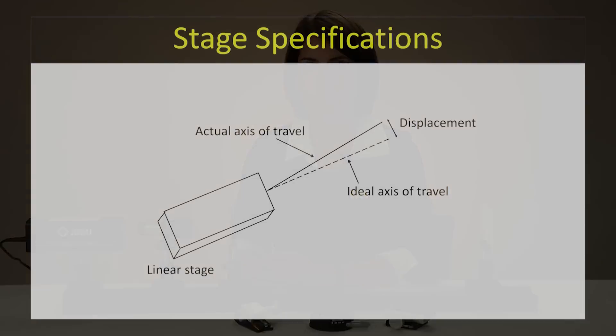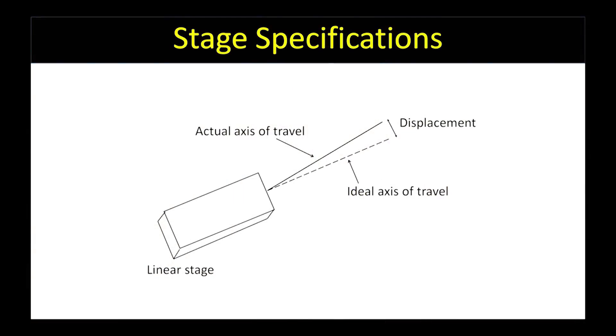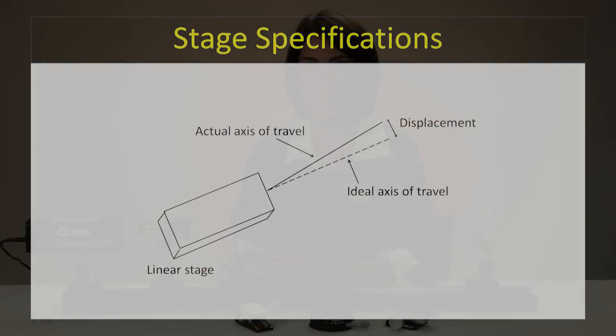Accuracy quantifies how closely a stage moves to the location desired by the user. Straight line accuracy is specific to linear stages and describes how accurate the stage stays along the ideal axis of travel. It is typically specified as a displacement per distance traveled, for example, two microns per 25 millimeters.